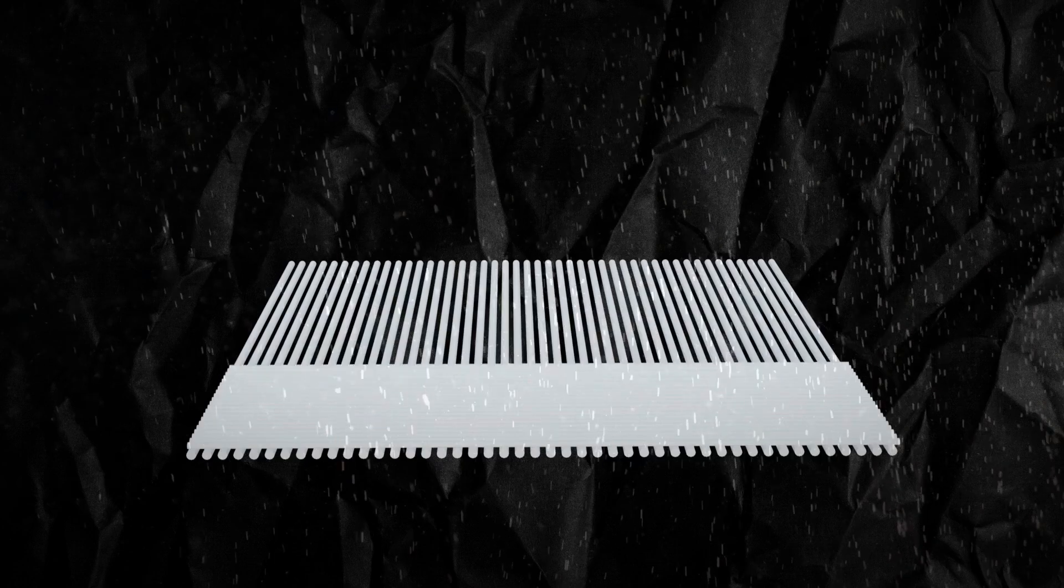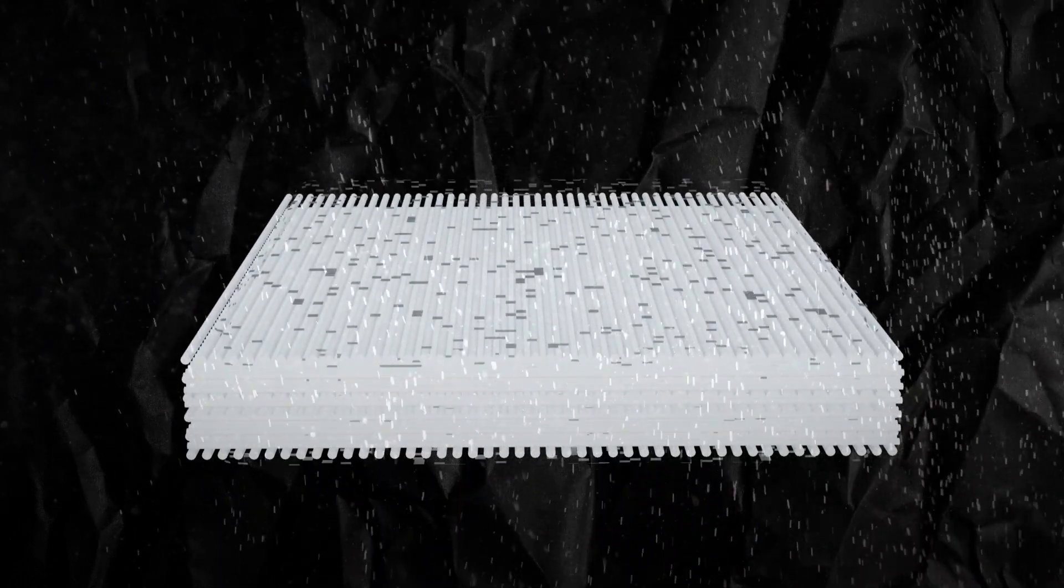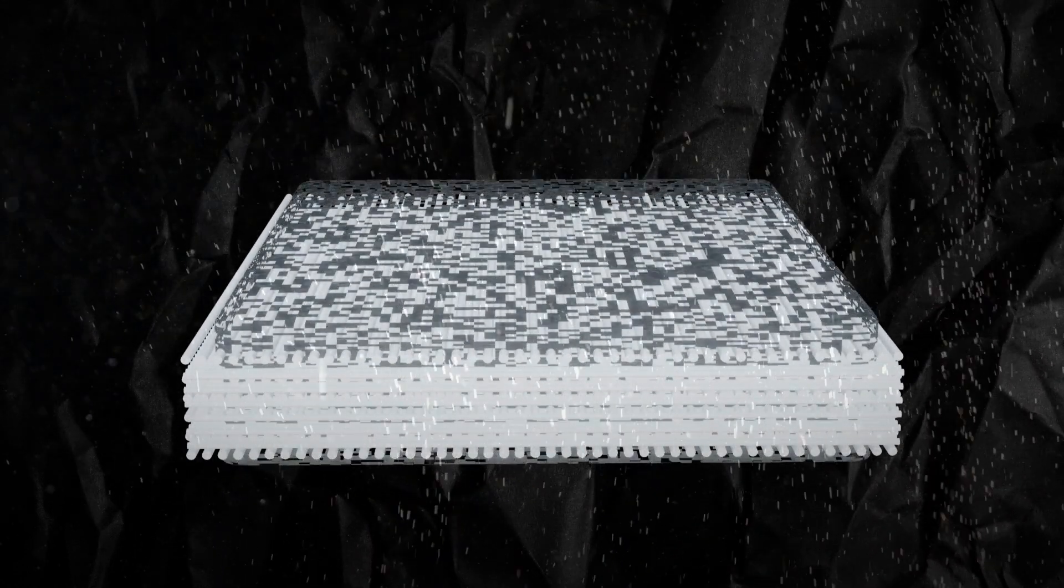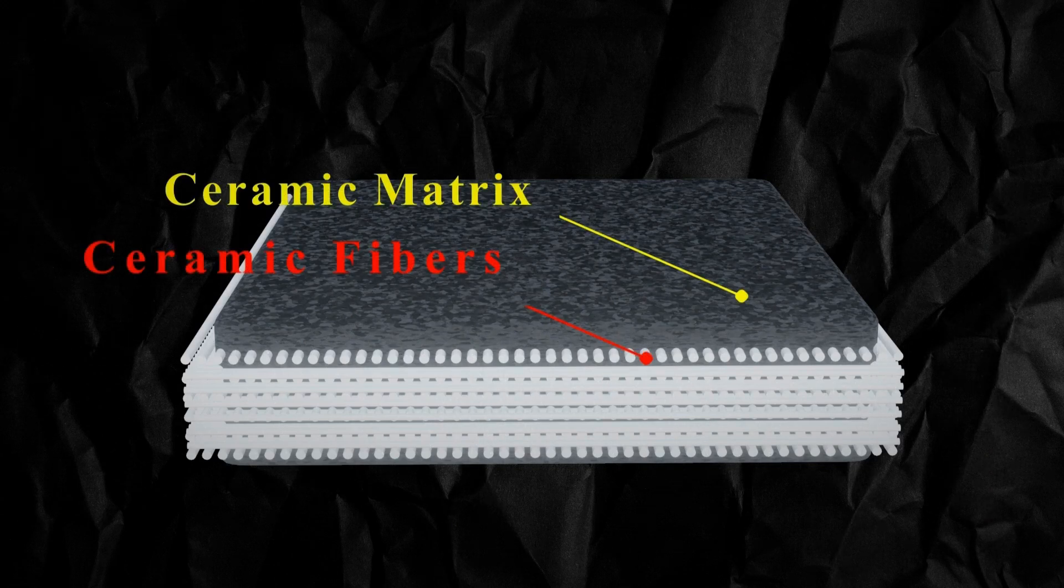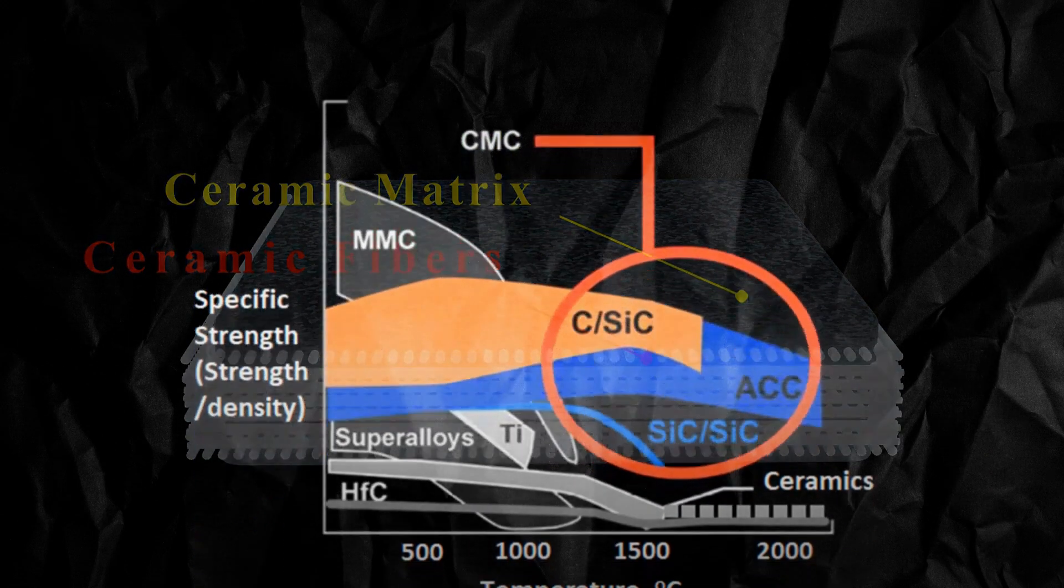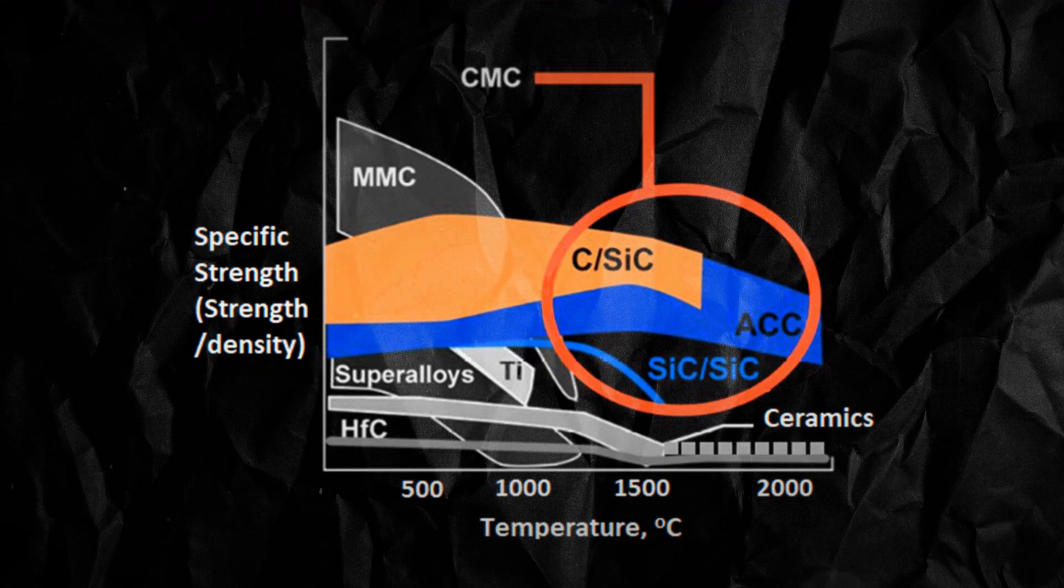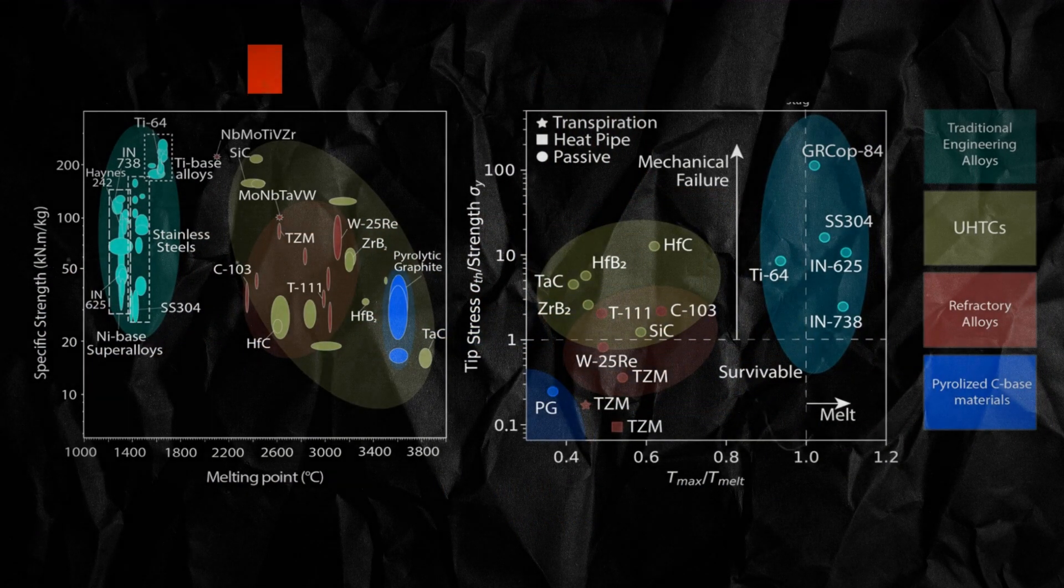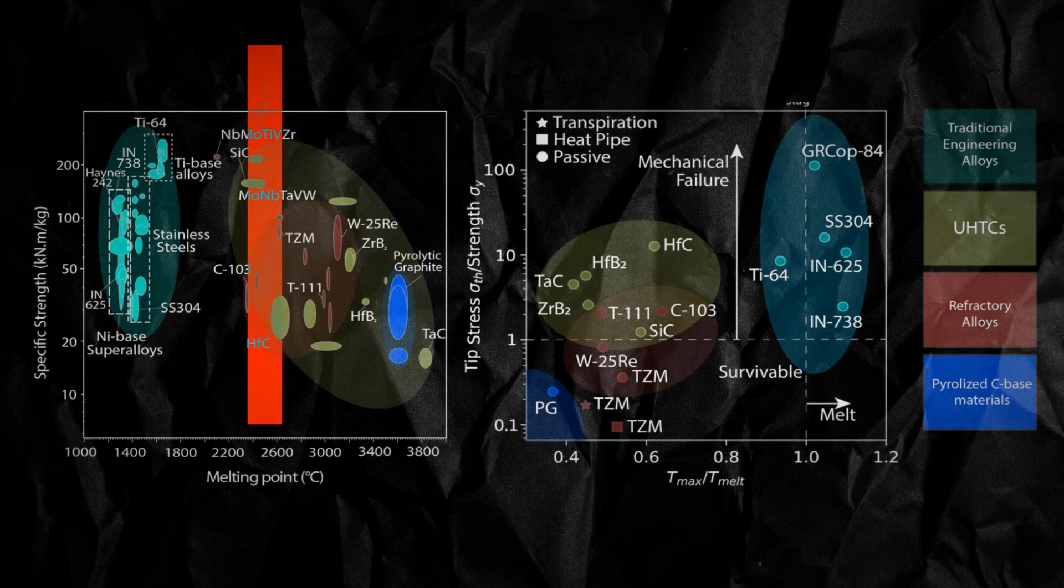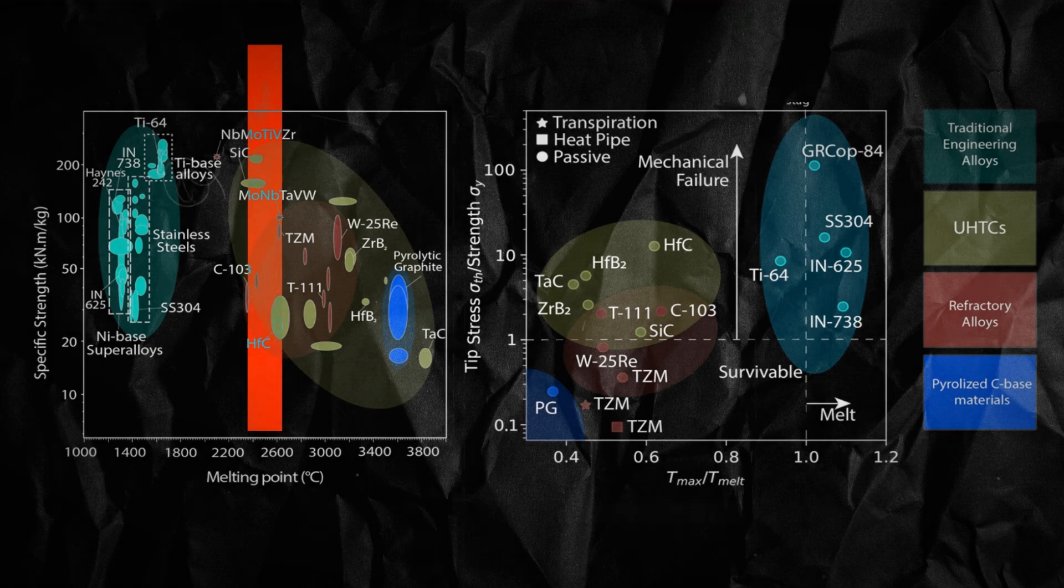Now, let's talk about ceramic matrix composites. These materials are like a super-strong sandwich with ceramic fibers embedded in a ceramic matrix. Silicon carbide-based CMCs are particularly popular. They're incredibly heat-resistant and can withstand temperatures up to 2,500 degrees Celsius.